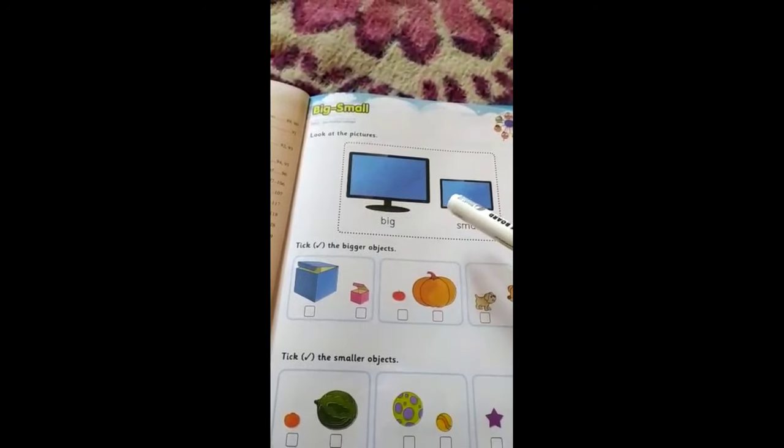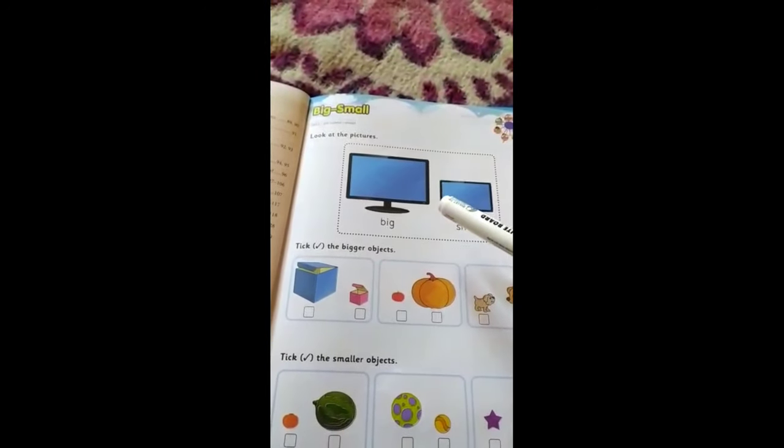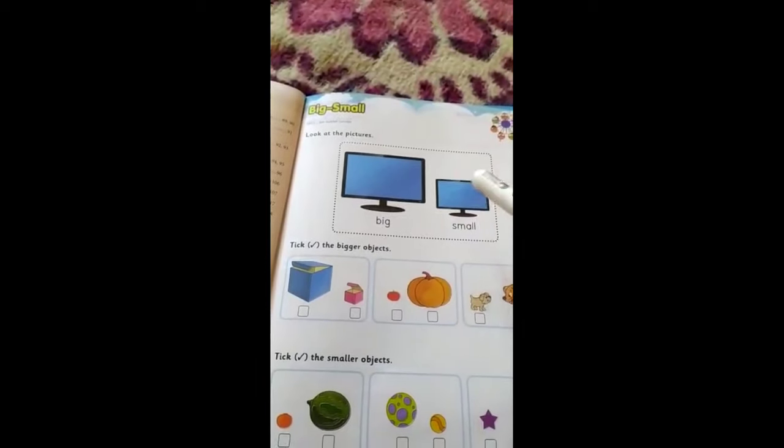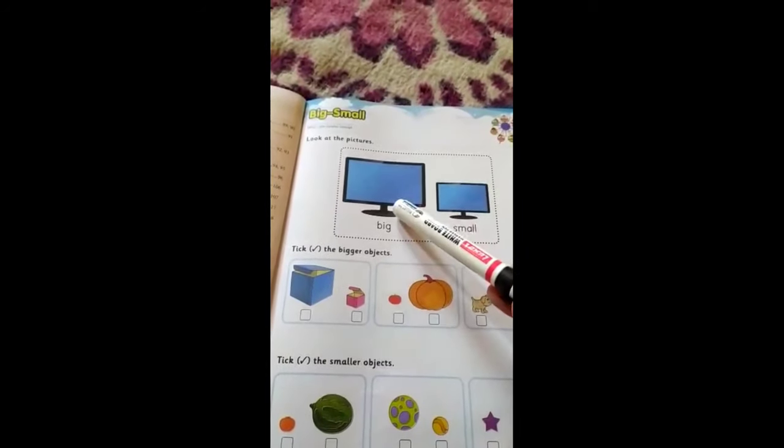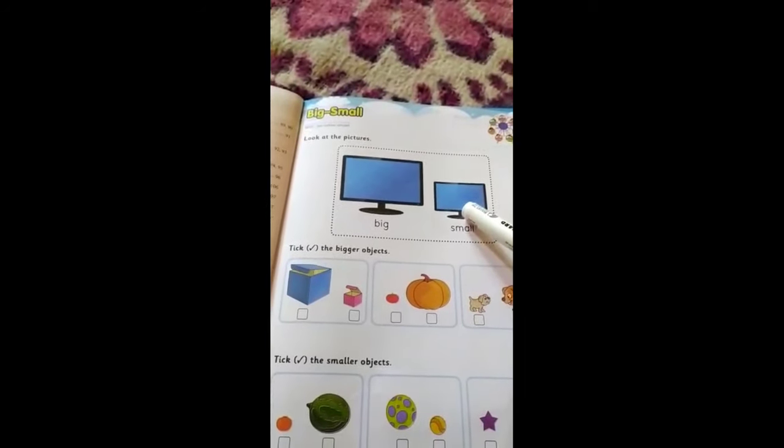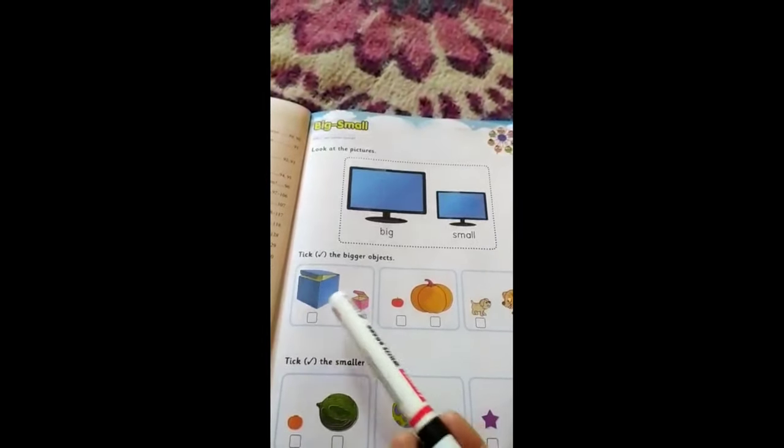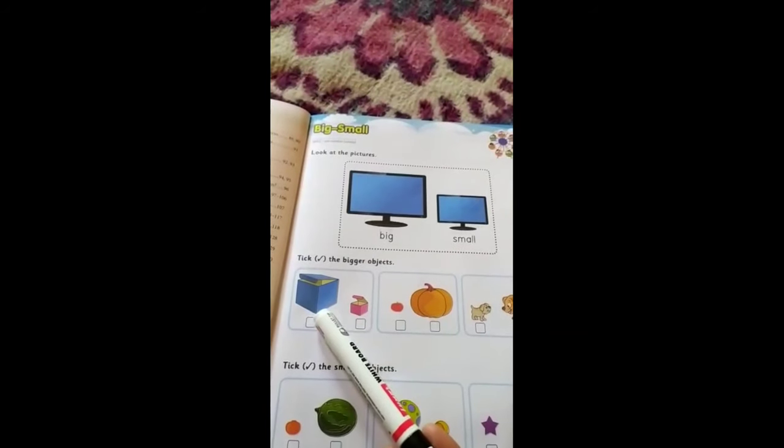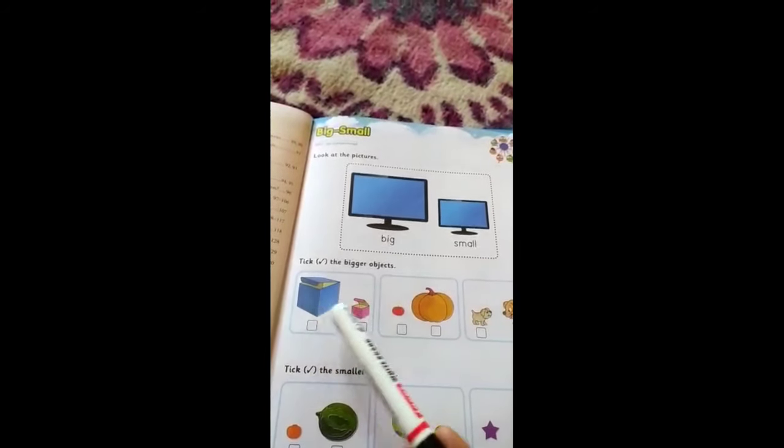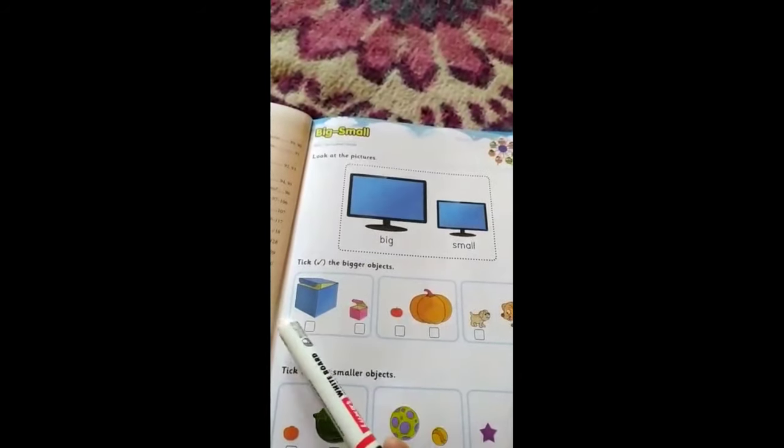Big and small. Now look here, these are two boxes. When we compare these two boxes, we can say this box is big, bigger, while this is small. Big, small.